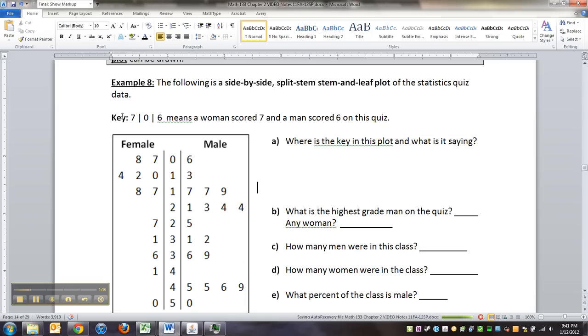And then up at the top, I had to put the key up there, which is 7 0 6. See that 7 0 6 right there means that a woman scored 70 and the man scored 60 on this quiz.